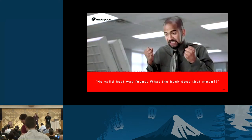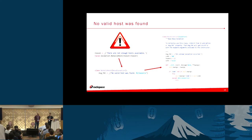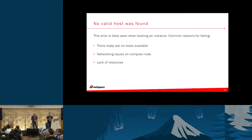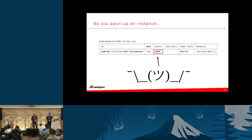'No valid host was found' — what does that mean? A lot of times that error is very ambiguous, so we need to get to the bottom of it. Likely reasons for this condition occurring are that there really aren't any hosts available for whatever reason — networking issues on a compute node, lack of resources (disk, RAM, CPU, etc.). The good news is that with Kilo, Juno, and Icehouse the reporting is a lot better, so if you're on an older version of OpenStack, upgrading may help that situation a lot.